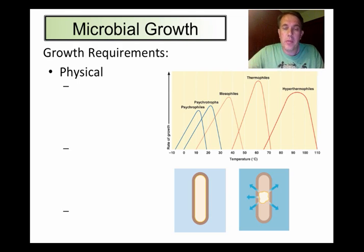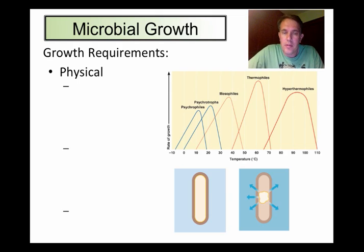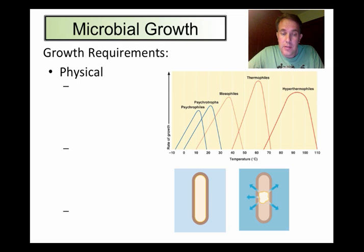When we talk about microbial growth, we're really referring to the number of cells present in a culture and not really the size of the cells. Bacterial growth is evidenced, as you've seen in the lab, by the appearance of visible colonies on a plate or on a slant, or by the increase in turbidity or cloudiness if they're grown in a liquid culture.